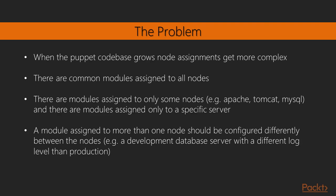When the Puppet code base grows, node assignments get more complex. For example, there are common modules assigned to all nodes, and modules assigned only to some nodes — for example, a system running Apache, another running Tomcat, and a third running MySQL. There are also modules assigned only to a specific server, or a module assigned to more than one node that should be configured differently between nodes — for example, a development database server with a different log level than in production. These are the problems we would like to solve with the roles and profiles pattern.